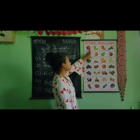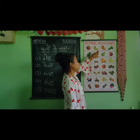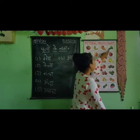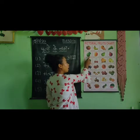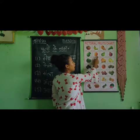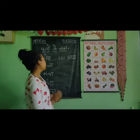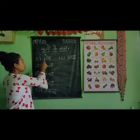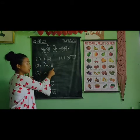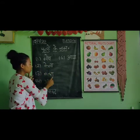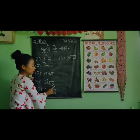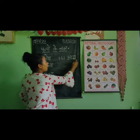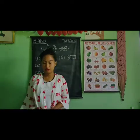Let's revise. Say: Kela. Santra. Angoor. Amrood. Aam. Okay? Now look at the board. Say: Kela. Santra. Angoor. Amrood. Aam. Very good.